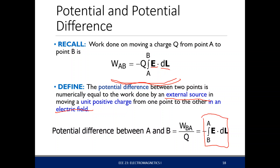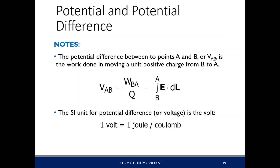Don't get confused when dealing with work and potential, because in reality your subscripts for work and potential are actually swapped. When you're getting the potential difference between two points A and B, you're assuming that the charge moved from B to A. The potential difference V sub AB means we're looking at the movement from point B to point A. So V_AB is actually W_BA — the work from point B to point A — divided by Q.